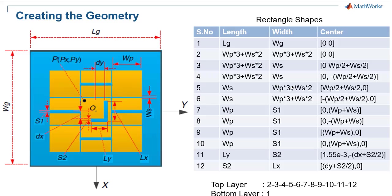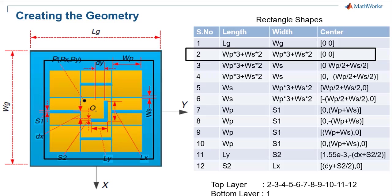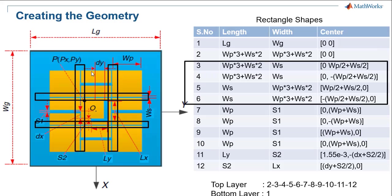The first step is to create the ground plane with the dimensions LG and WG with the center at the origin. To create the top layer, follow the steps from serial number 2 to 12 in order. First, create a square with the center at the origin, then subtract all the rectangles following that square. Next, create four rectangles with the dimensions given in the table — subtracting these from the square will give 9 smaller squares as shown in the figure.